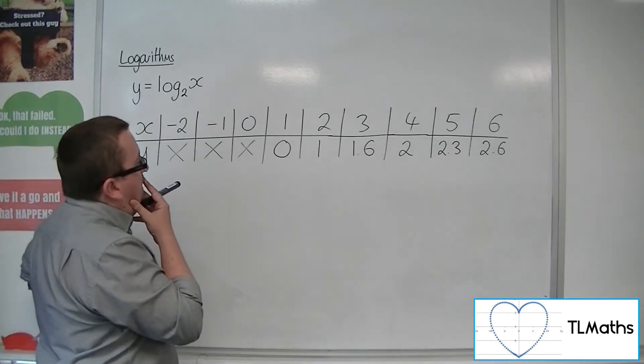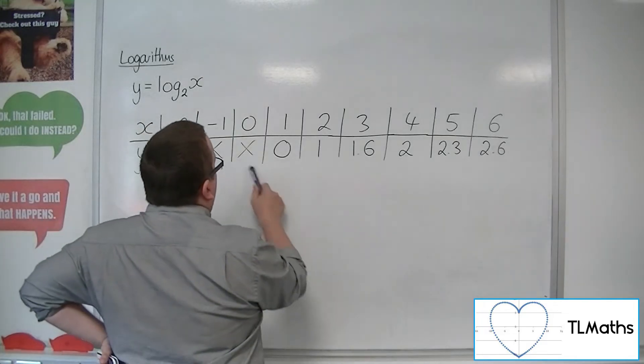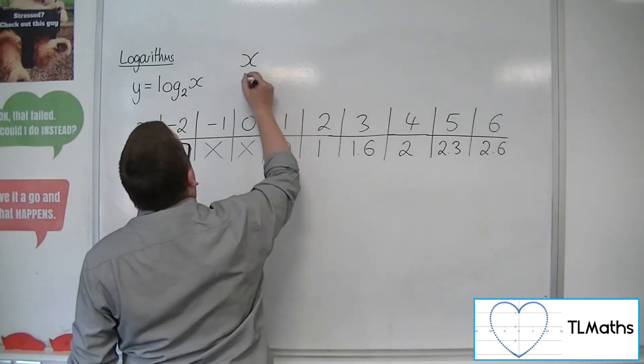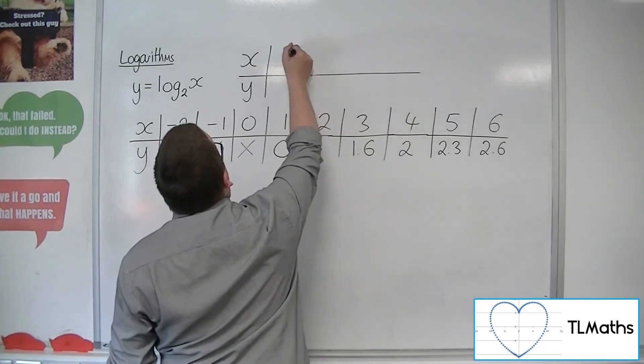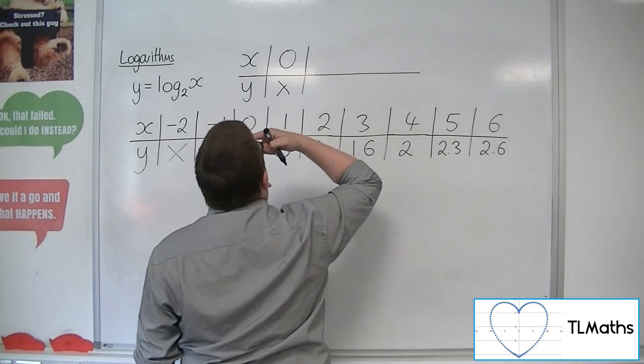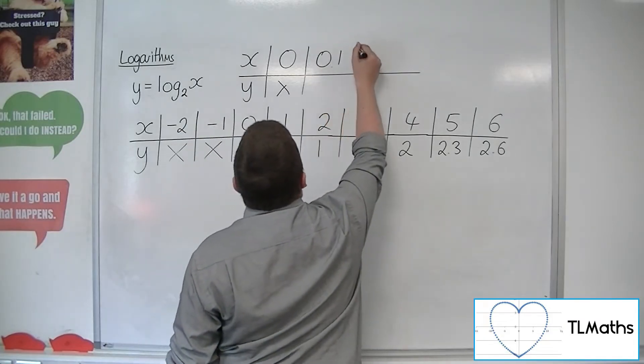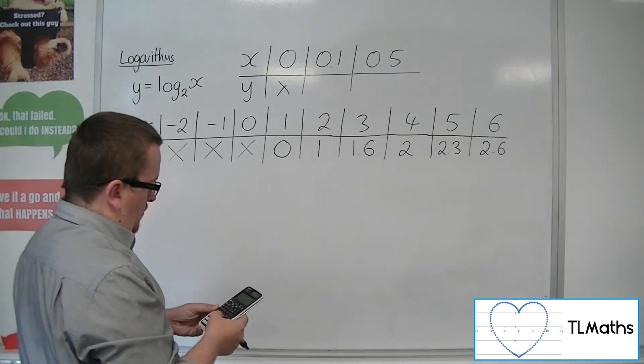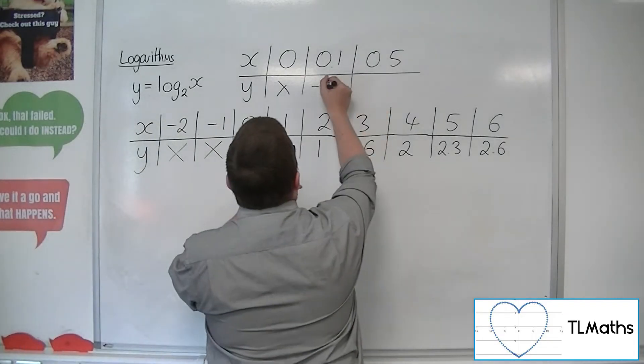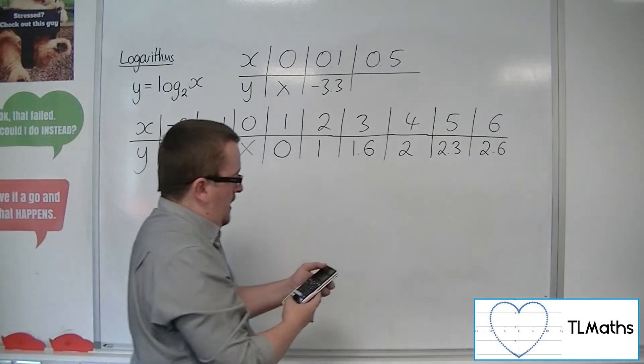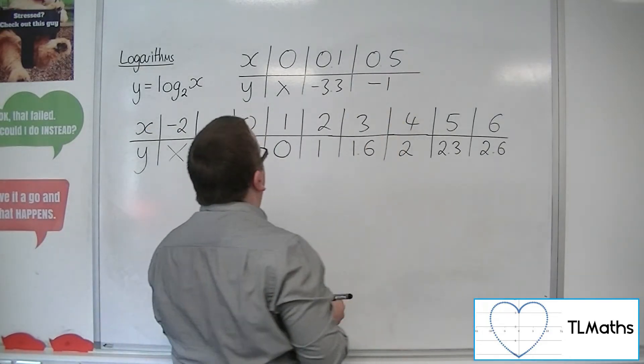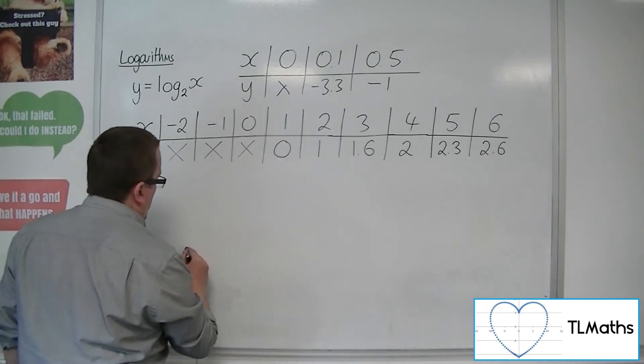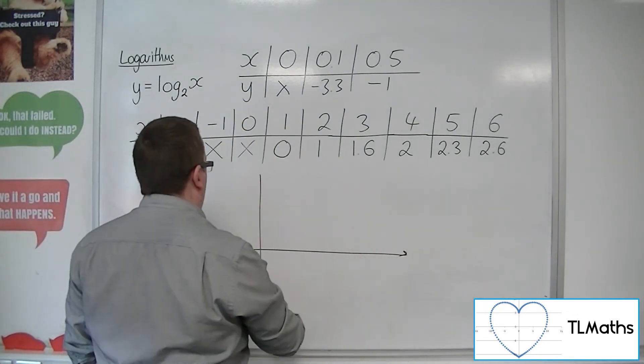So what can we see about this? Well, what's going on between these two values probably needs a little bit of exploration. So let's have another bit of a table. We know that when we have 0, we don't get a value. So we probably need something like 0.1, let's do a couple of values, let's do 0.5 as well. So log base 2 of 0.1 is minus 3.3 to one decimal place, and 0.5 is minus 1. Right, so based on that, we can start to get a picture of what's going on.